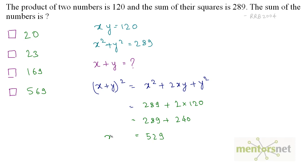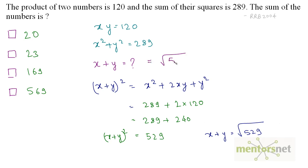So x plus y whole squared equals 529. But that's not what we want — we want x plus y. So x plus y equals the square root of both sides, which gives us the square root of 529. And the square root of 529 equals 23, because 529 is the square of 23. So we have the answer: option B.